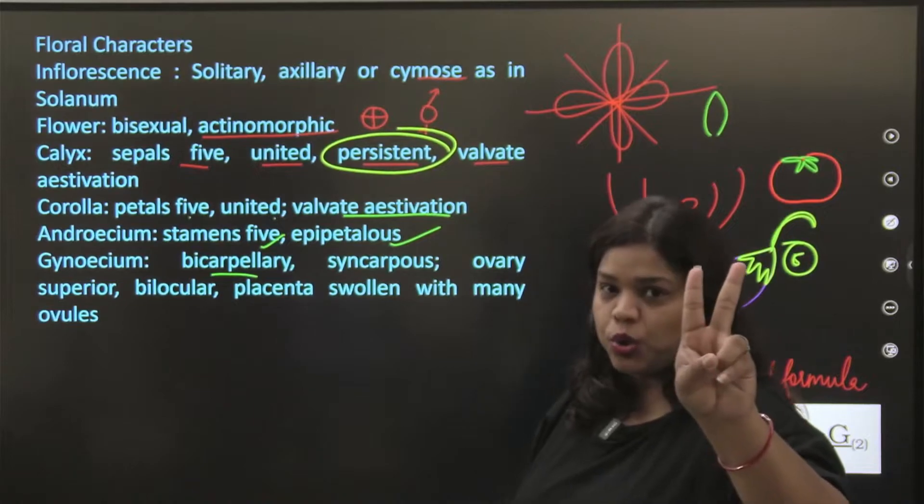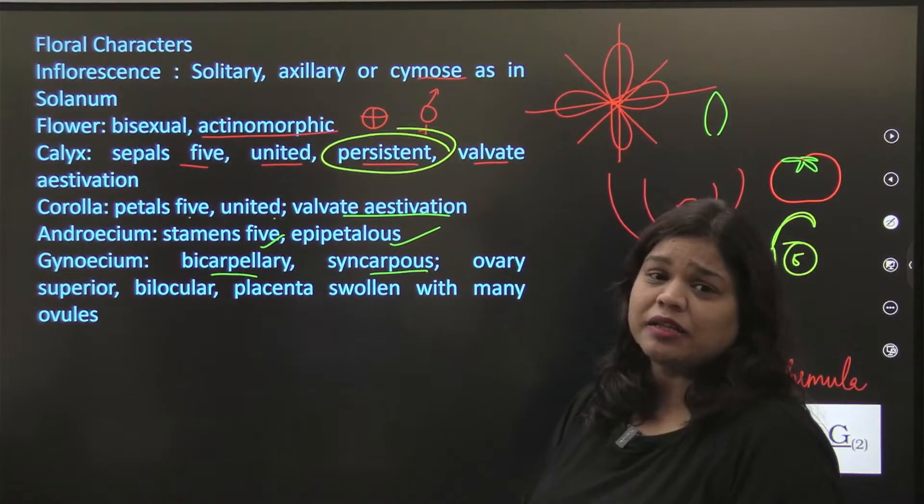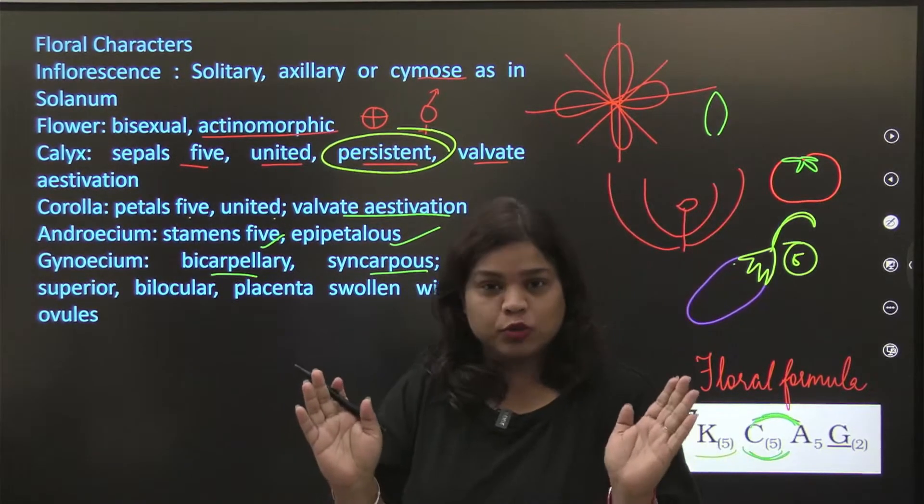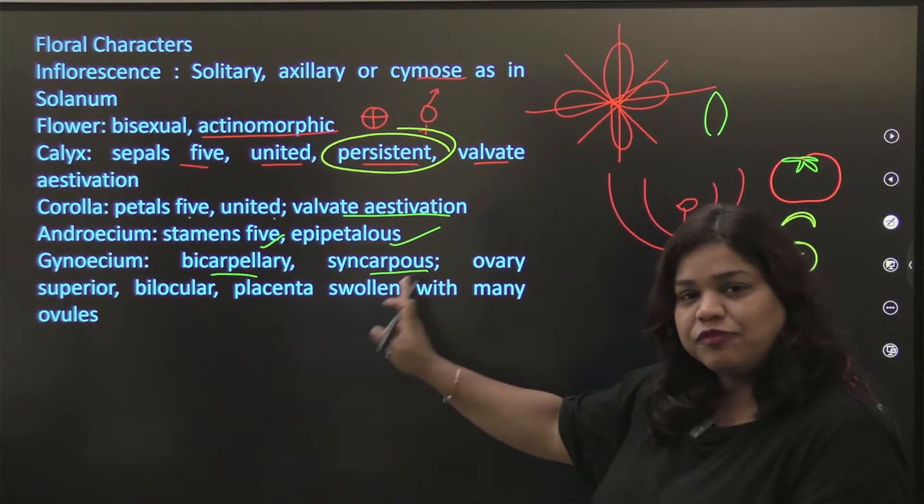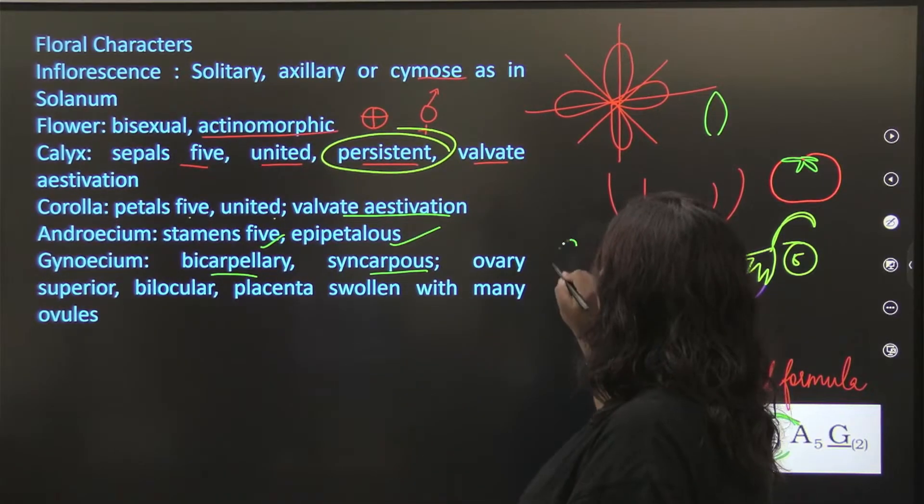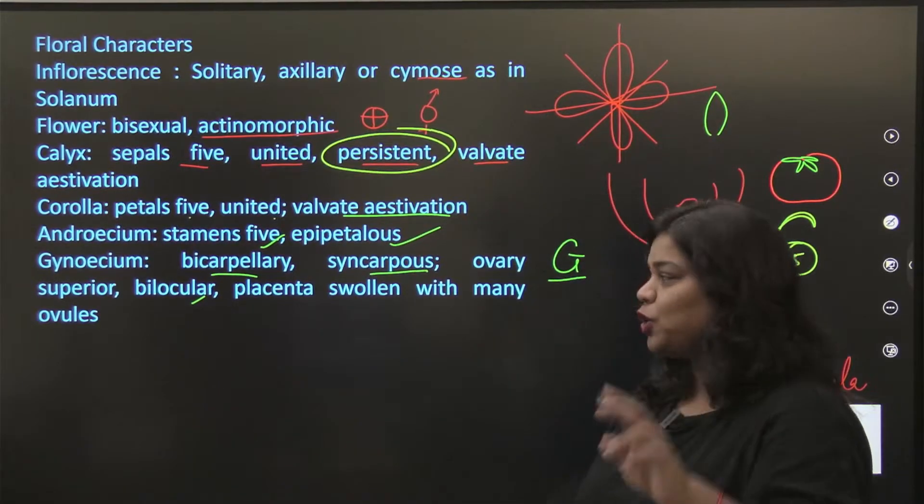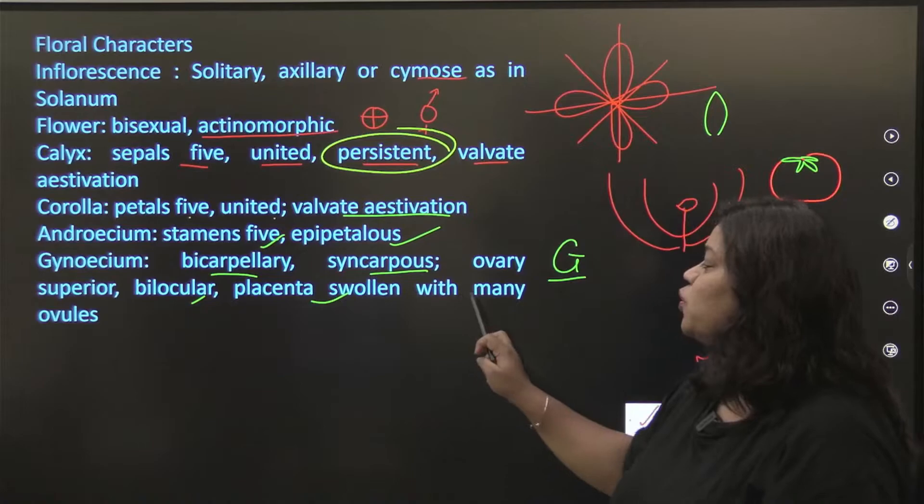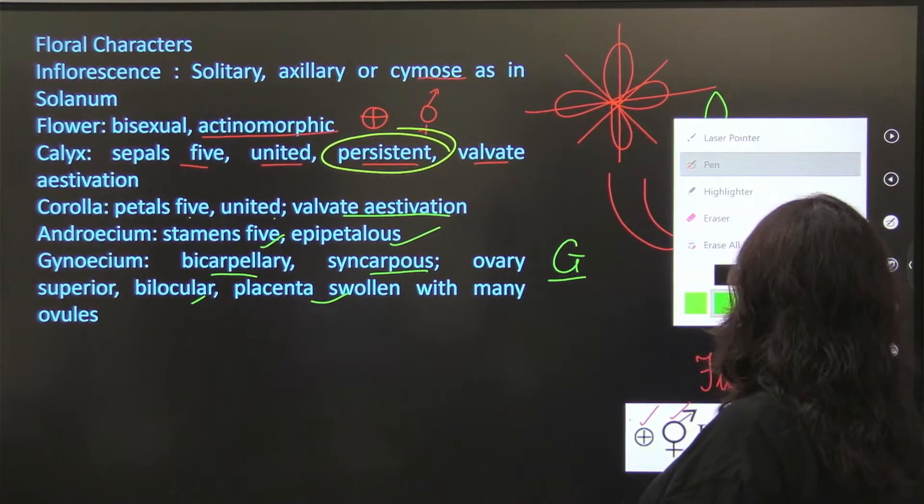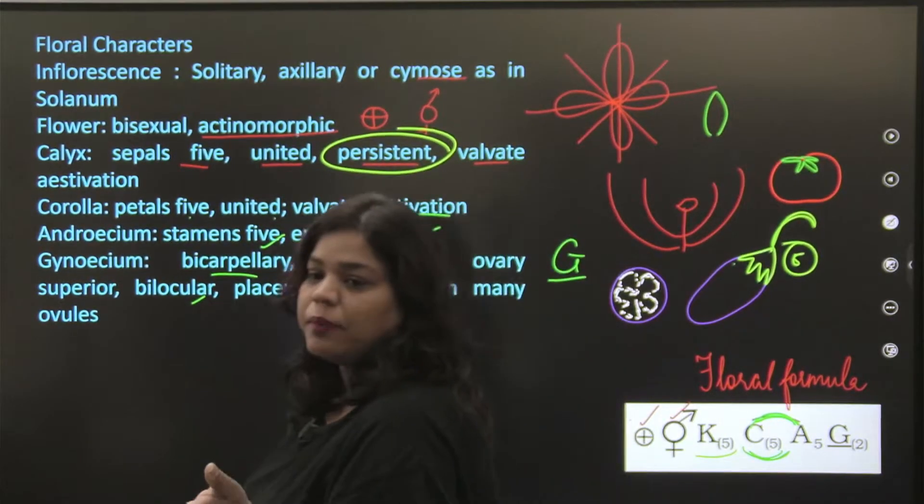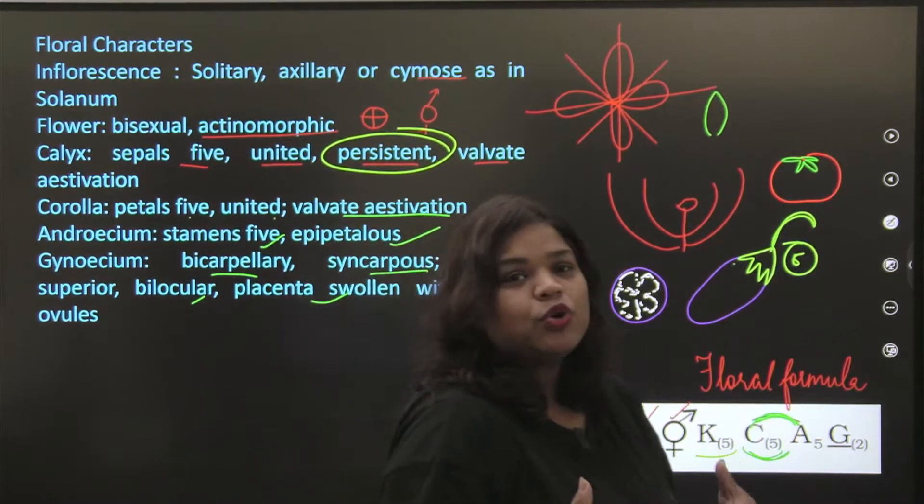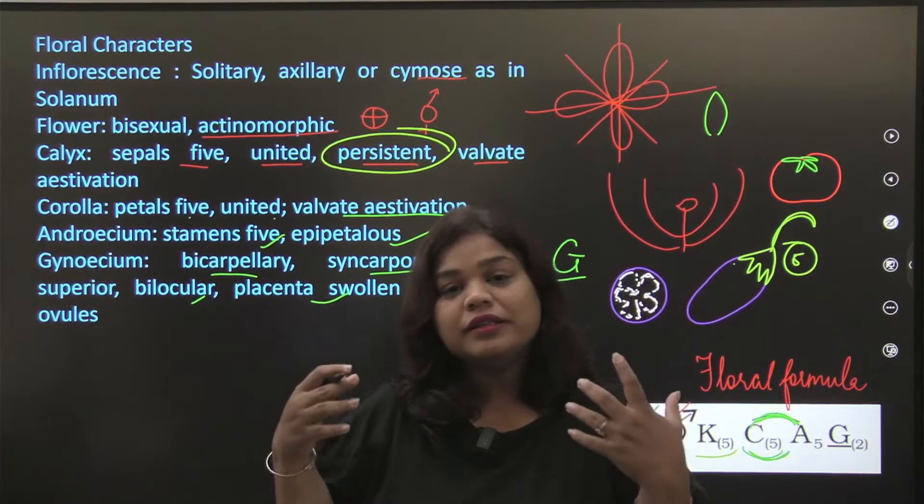Gynoecium is bicarpellary. Bi, that means two carpels. Syncarpous. What was syncarpous? Apocarpous, they were not fused, lotus. In tomatoes we have studied, they aren't fused. We have said syncarpous. So what is that? It's fused, it's syncarpous. Ovary is superior. Ovary is superior. Very good. Bilocular, two locules. If you cut a brinjal, if you cut a brinjal this way, so you will see the seeds are present. There are many and you get it. So this is your, somewhere down the lane, what is your placentation. It's explaining, it's your placentation, it's describing. Whenever you cut fruits, if you want to focus on all these things, how easy it will be to learn. So remember.